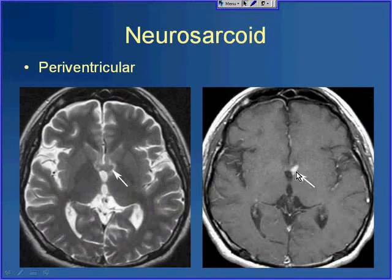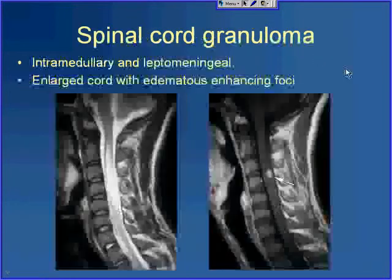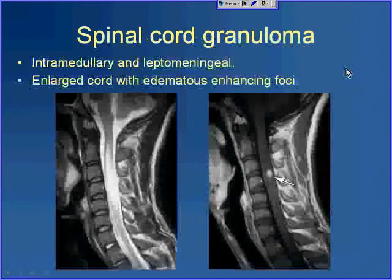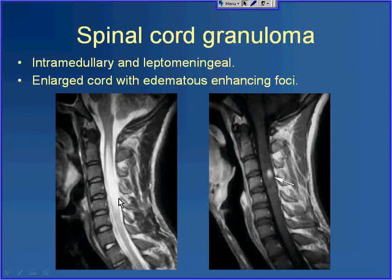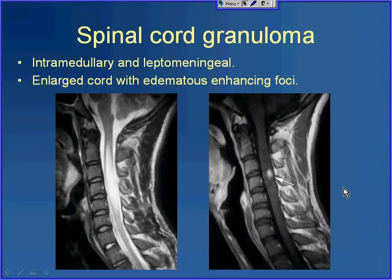On post-contrast T1, you can see the lesion is enhancing. Spinal cord involvement can also occur — either leptomeningeal involvement extending into the spinal region, or actual involvement of the cord itself. Here we have a T2-weighted image where the cord is expanded and very hyperintense, corresponding to edema. On post-contrast T1-weighted images, you can see a small nodule of enhancement. Sarcoid would not be the first thing you'd say here, but it is in the differential.